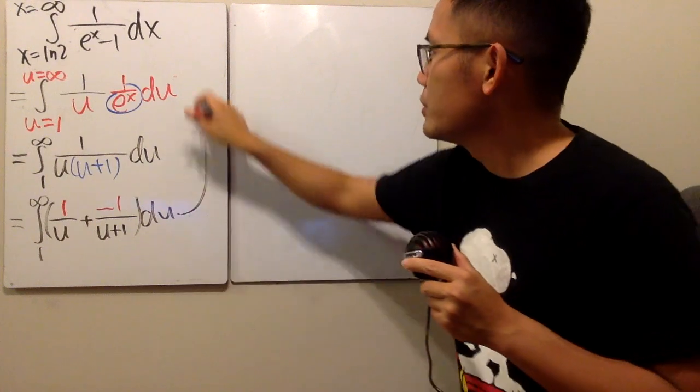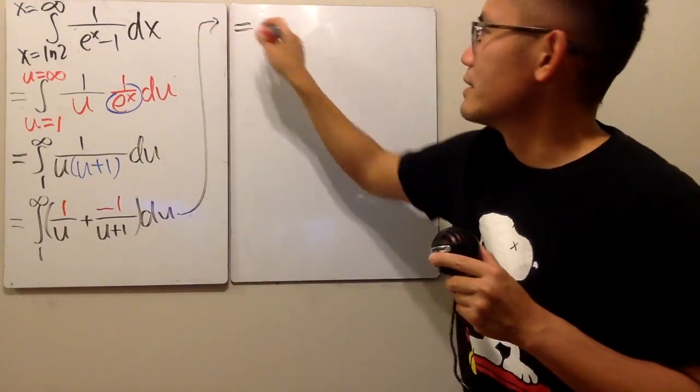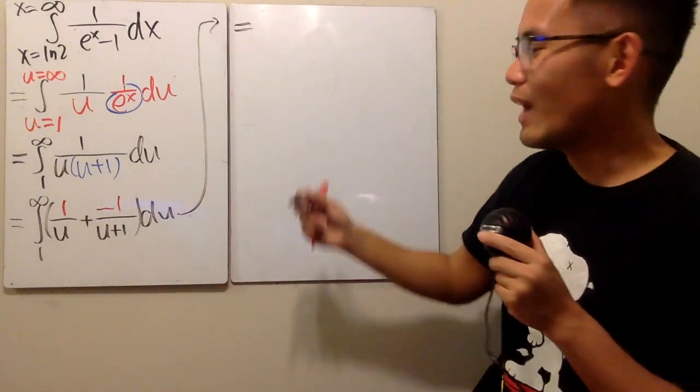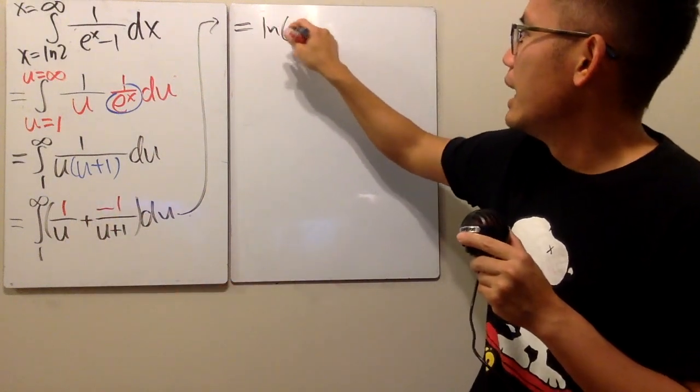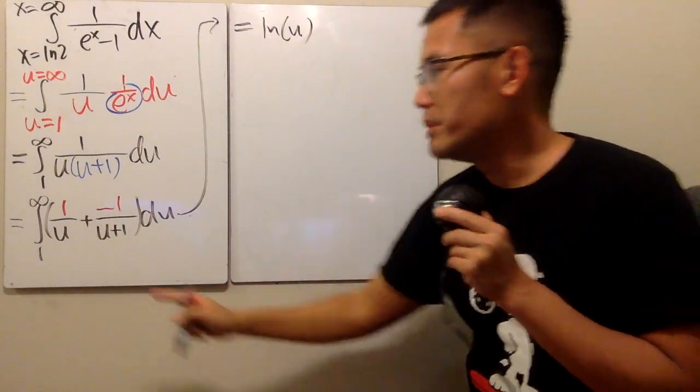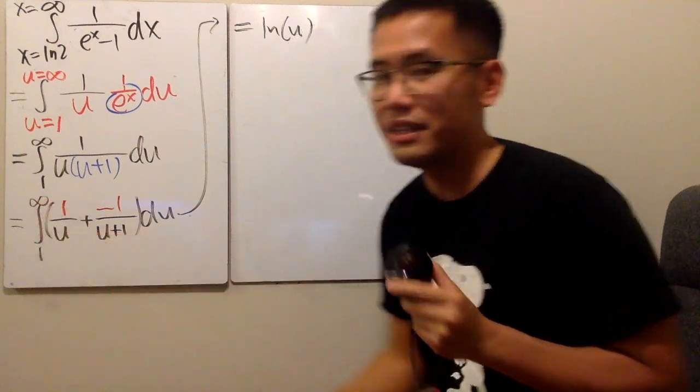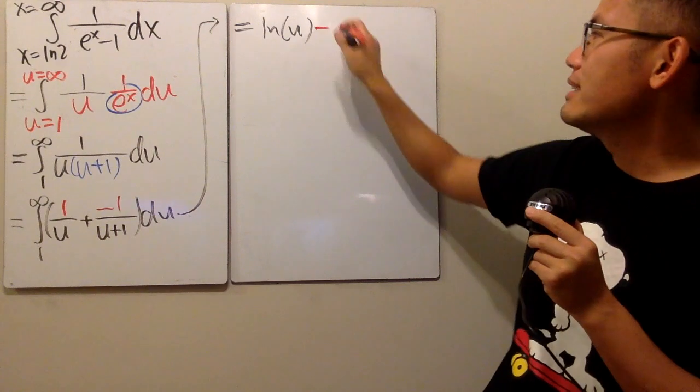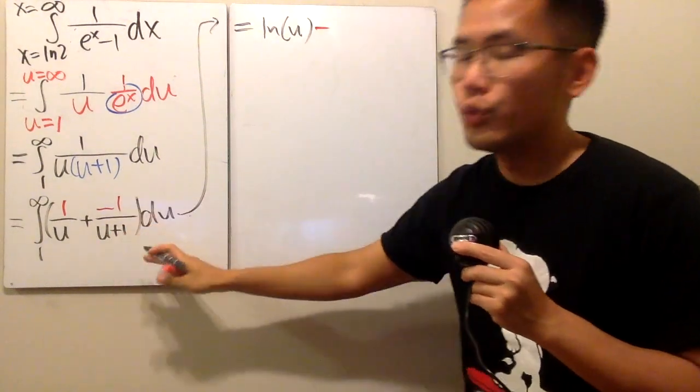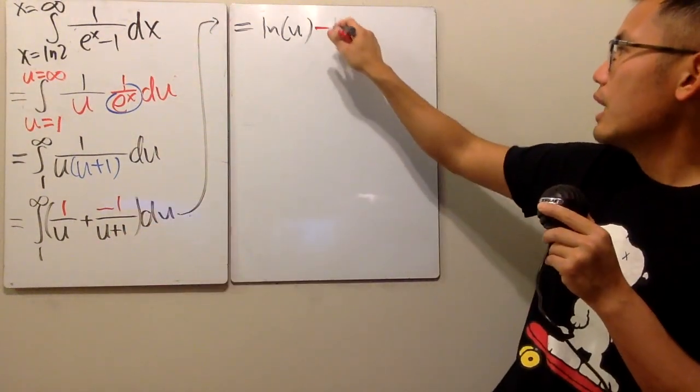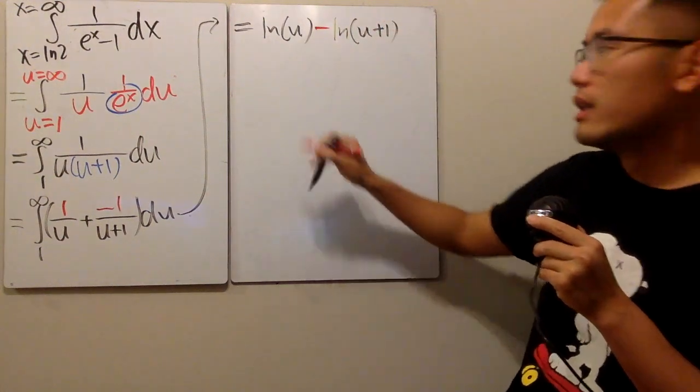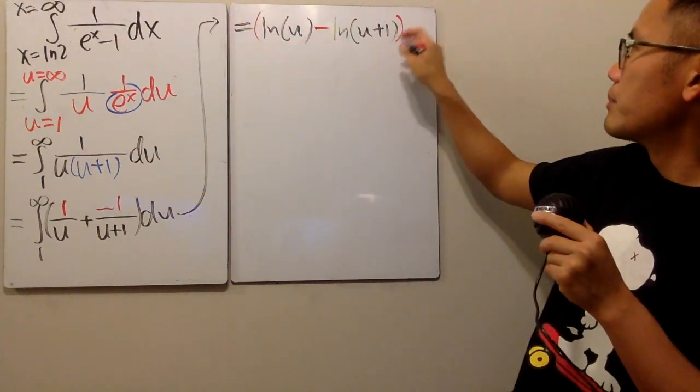And then, let me just put down the work right here, because I ran out of space. Integrating one over u, we get ln u. And I don't need the absolute value because we are just going from one to infinity. So, u is positive. Continue. Here you have the minus, and then integrating one over u plus one. You also get ln of u plus one, like this. Then, of course, we have to plug in numbers and all that.